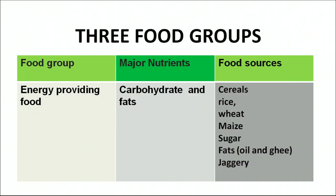Let us see the three food groups in this table. The first table shows energy-providing food — the major nutrients of energy-providing foods are carbohydrates and fats. Food sources from which we can get energy-providing foods are cereals, rice, wheat, maize, sugar, fats, oils, ghee and jaggery. These all are energy-providing foods in our diet.